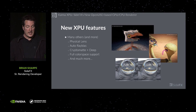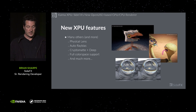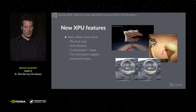We also have a physical lens, which allows for special lens warps, blurs, and bokeh effects. We've added automatic ray bias, crypto matte, deep output, full color space support, and much more. We invite you to take a look when Houdini 20 is released later this year.